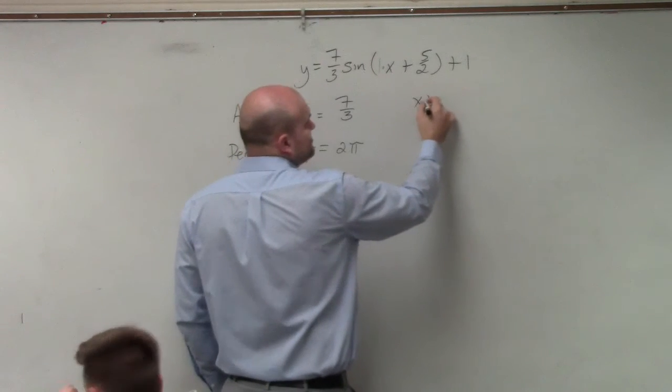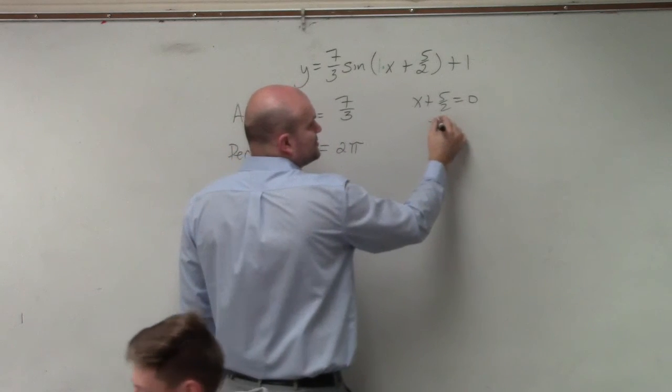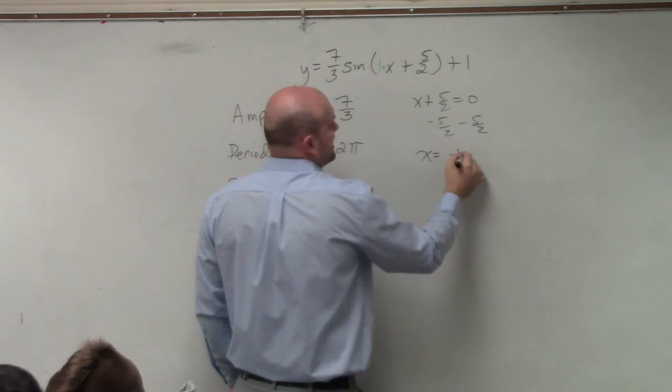However, if you wanted to use the system I showed you, always set it equal to 0. When you solve, you get x equals negative 5/2.